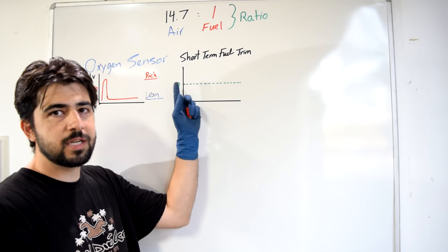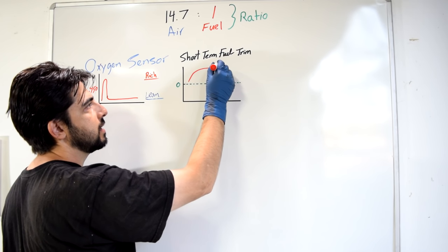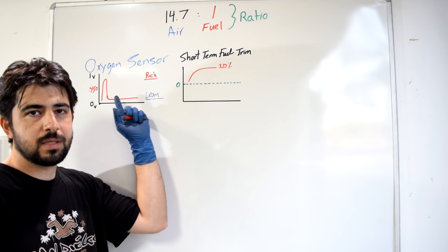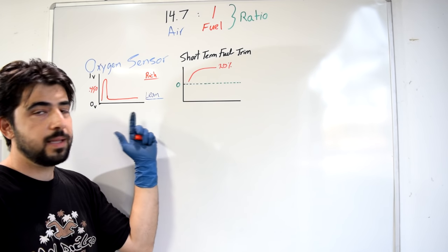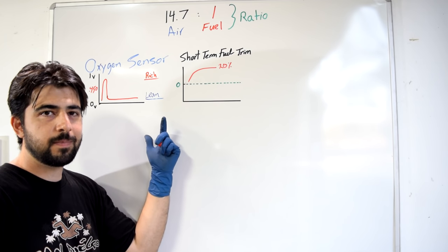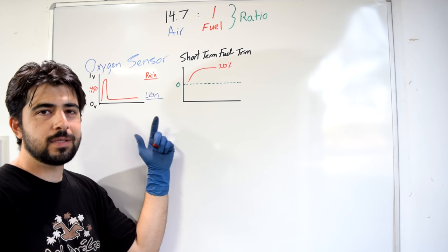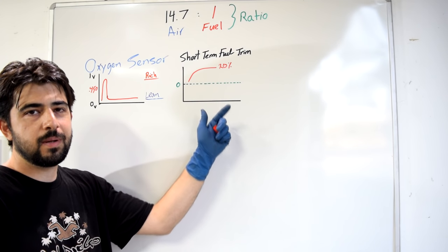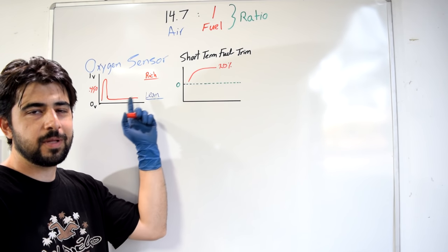That increase will show as a positive percentage in your short-term fuel trim, and it will increase until your oxygen sensors start oscillating again between 0.1 and 0.9 volts. That's given your oxygen sensors are working properly. If you have a bad oxygen sensor that's shorted to ground and putting out 0.0 volts, the short-term fuel trim will increase — not because of a MAF sensor or fuel injector problem, but simply because the oxygen sensor is bad.